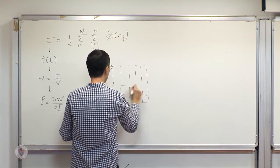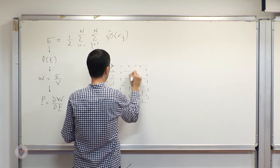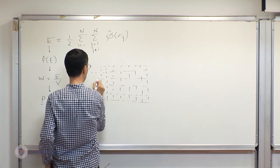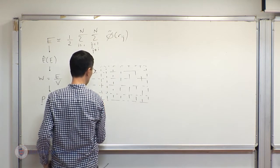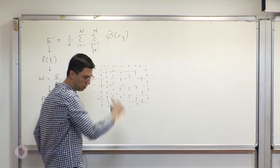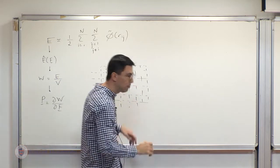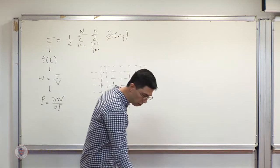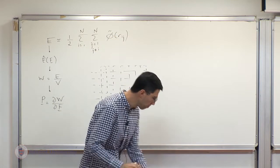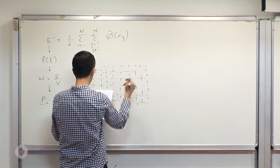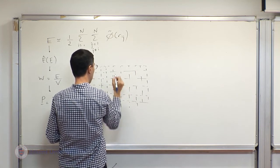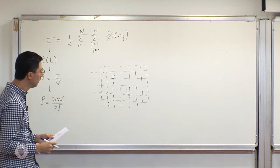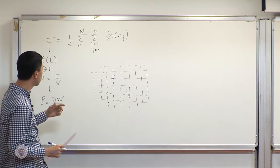Drawing a grid, I indicate some positions of atoms. The grid is large — it extends, if you like, to infinity — meaning I am going to encapsulate a very large number of atoms. I am drawing only a certain portion of it and highlighting two atoms, let's say i and j.